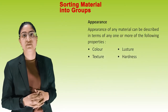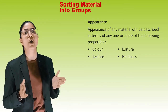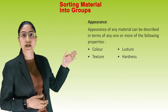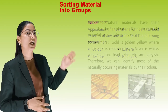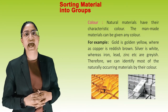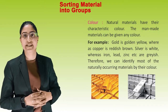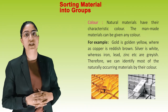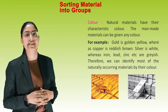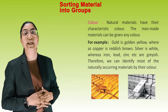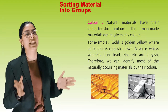Appearance of any material can be described in terms of color, texture, luster, or hardness. Natural materials have their characteristic color; man-made materials can be given any color. For example, gold is golden yellow, copper is reddish brown, silver is white, whereas iron, lead, zinc, etc. are grayish. Therefore, we can identify most naturally occurring materials by their color.